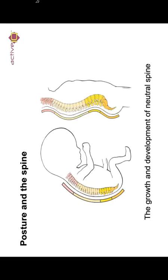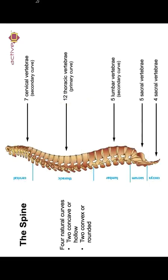Posture of the spine — growth and development of neutral spine. Within the spine, you should know that it's broken down into several sections. At the top you've got the cervical, which comprises seven cervical vertebrae. You've got the thoracic, which is 12 thoracic vertebrae. You've got the lumbar, which is five. The sacrum, which is five. And then the coccyx, which is four.